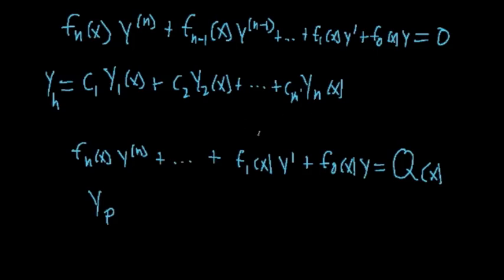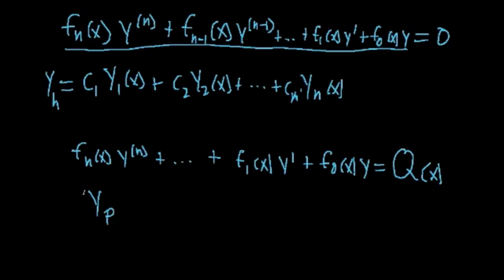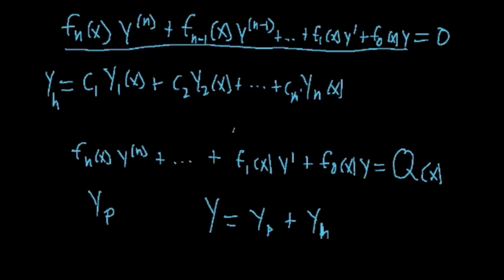To summarize: if we plug y_h into the homogeneous equation, we get zero; if we plug y_p into the non-homogeneous equation, we get q(x). So the particular solution y_p satisfies the non-homogeneous case. But what is the general solution to the non-homogeneous differential equation? The general solution y equals y_p plus y_h — the particular solution plus the general solution to the homogeneous equation, which is that linear combination of our n solutions.